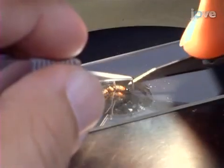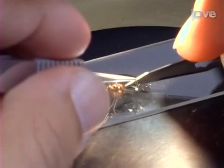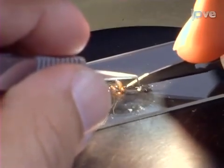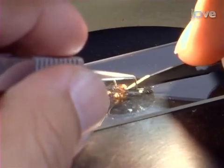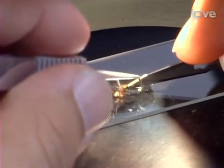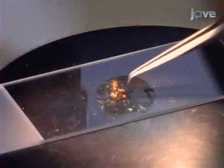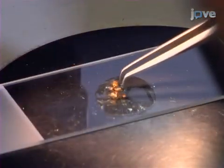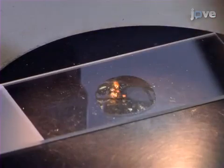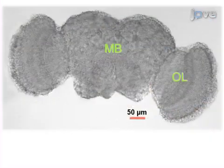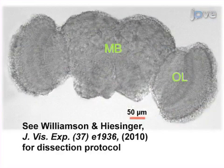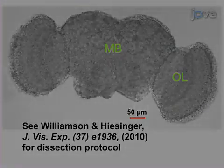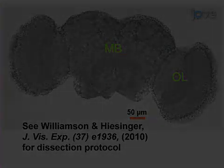Then decapitate the fly heads under a dissection microscope, avoiding desiccation. Discard the fly bodies. Now extract the full brain, carefully removing cuticle particulates and any non-brain tissue, like the eye pigment tissue.